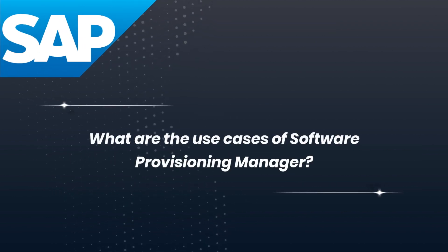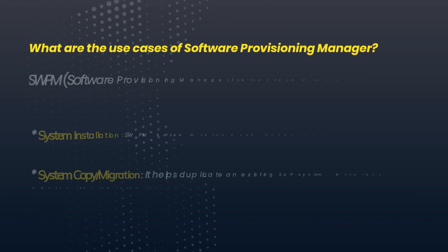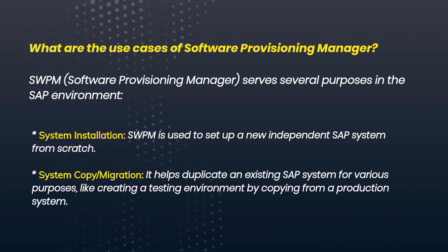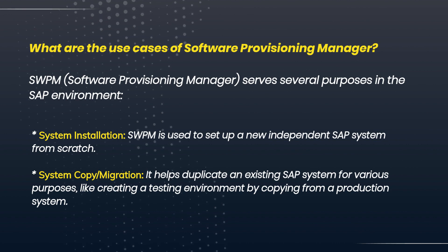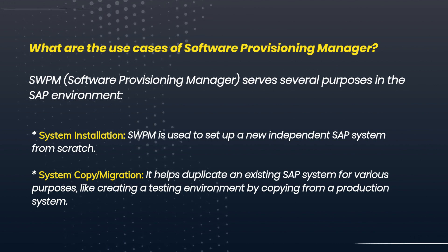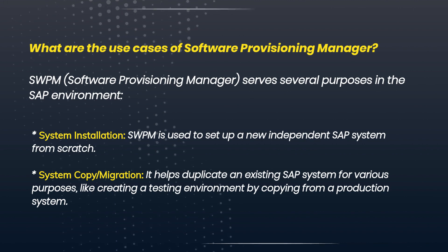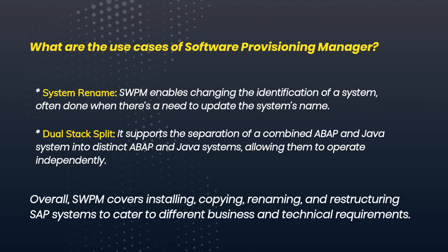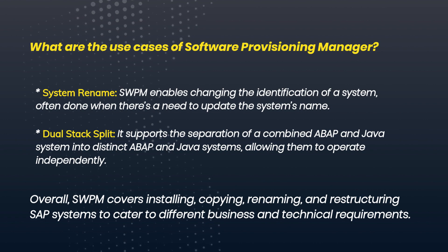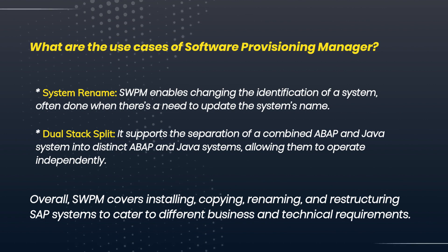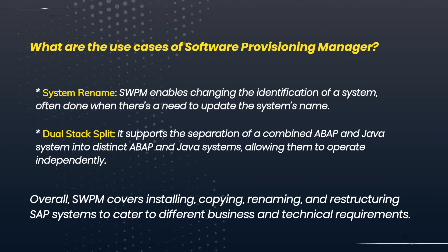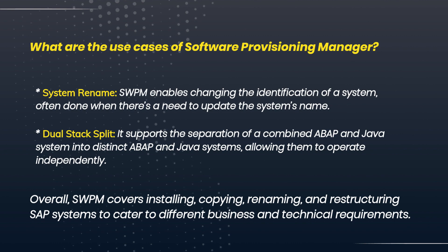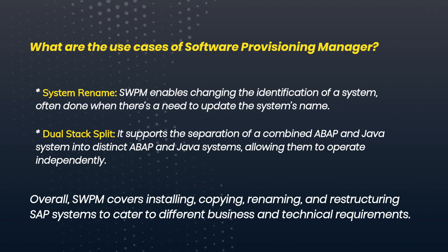What are the use cases of Software Provisioning Manager? SWPM serves several purposes in the SAP environment. System installation: SWPM is used to set up a new independent SAP system from scratch. System copy and migration: it helps duplicate an existing SAP system for various purposes, like creating a testing environment by copying from a production system. System rename: SWPM enables changing the identification of a system, often done when there's a need to update the system's name. Dual stack split: it supports the separation of a combined ABAP and Java system into distinct ABAP and Java systems, allowing them to operate independently. Overall, SWPM covers installing, copying, renaming, and restructuring SAP systems to cater to different business and technical requirements.